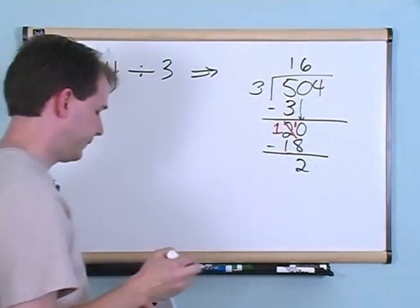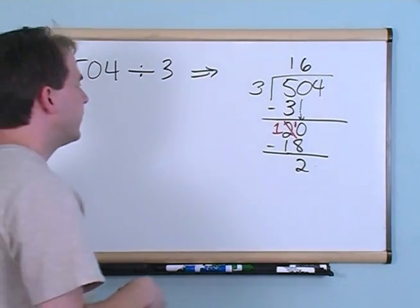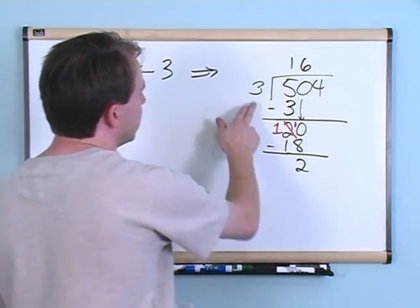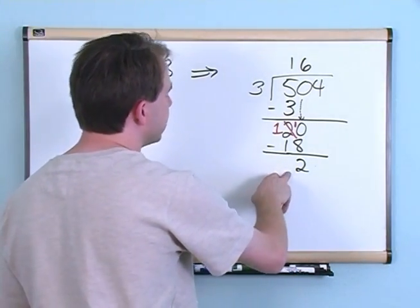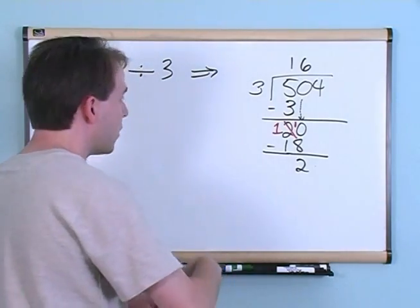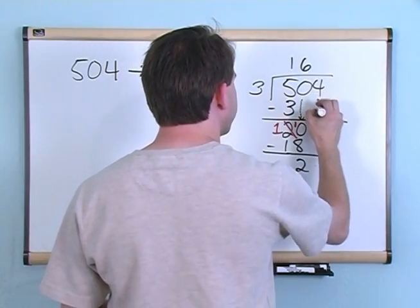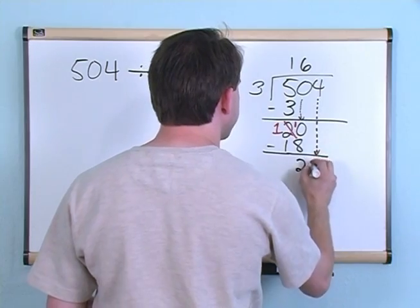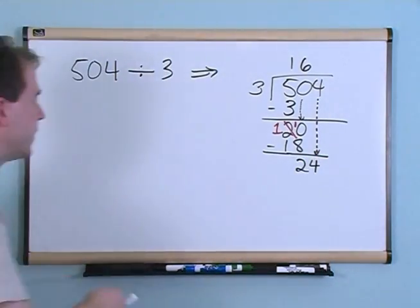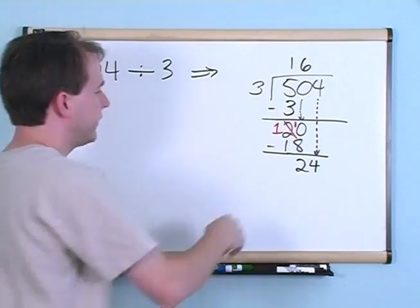Now, continuing on. Can 3 be divided into 2? No, it can't because 2 is too small. So I'm going to take this 4 and bring it down here. I'm going to make it 24. Now I can do this division into 24.